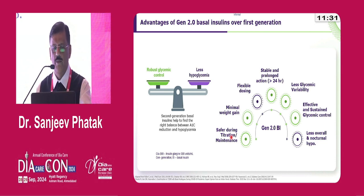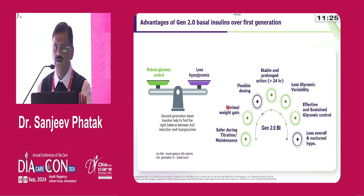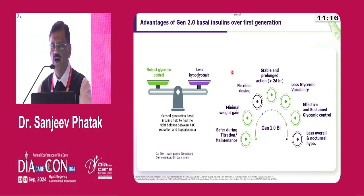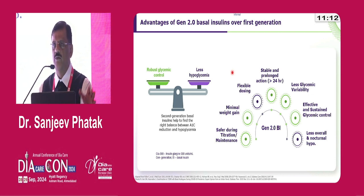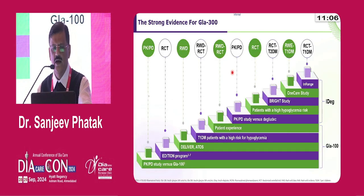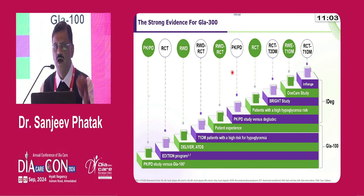It should be safer during titration and maintenance — very important because the titration period governs how long the patient will continue insulin and how much A1c reduction occurs. It should be associated with minimal weight gain; because of lower hypoglycemia risk, second generation insulin has lower weight gain than first generation. There is also dosing flexibility: with U100 you have to inject at the same time every day, but with glargine U300 you have a three-hour flexibility window — three hours earlier or later — which is necessary because you cannot inject at exactly the same time every day for the rest of your life.